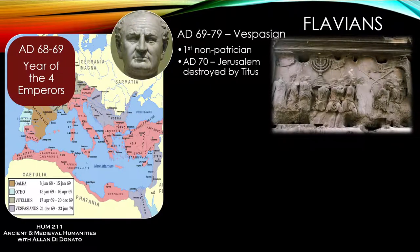Vespasian is successful in becoming emperor, reigning from 69 to 79 — incredibly popular not only as a general but also as an emperor. He was in charge at the time of Nero's death of the campaigns against the Jews in Judea. He leaves and comes back to Rome, leaving the campaigns under the oversight of his son Titus. He's the first non-patrician ruler, coming from the other classes. Under Vespasian, you start the construction of what we'll call the Flavian Amphitheater.